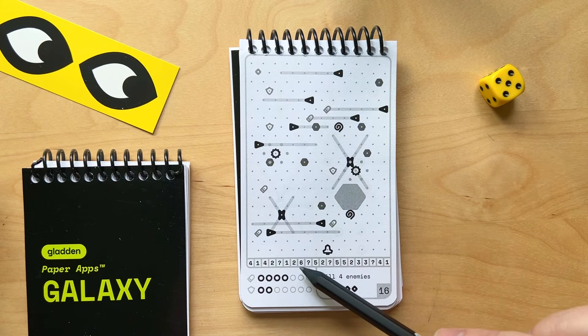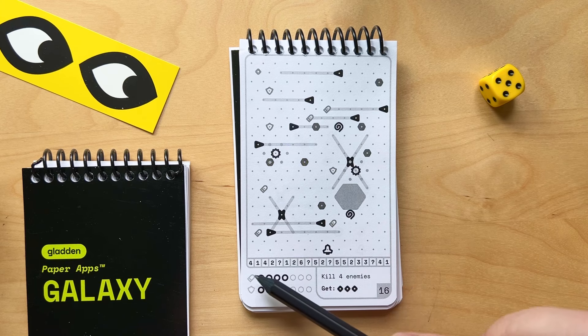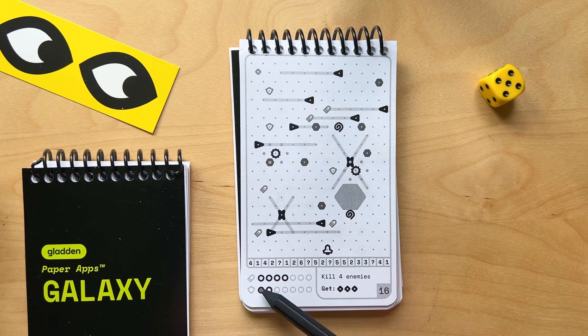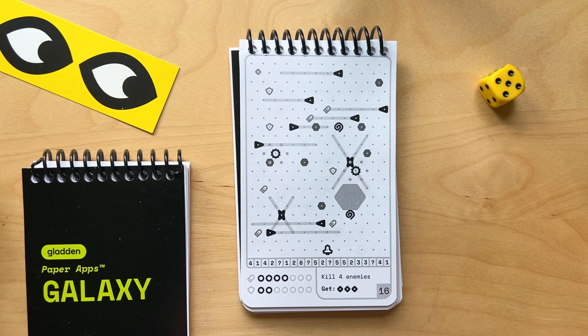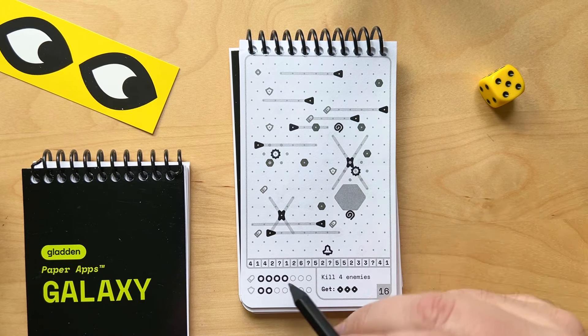Down here are pre-rolled values for moving around the level, so we'll use those. Here's your missiles, your shields, and then your mission. So kill four enemies, get three credits. So let's go ahead and start.